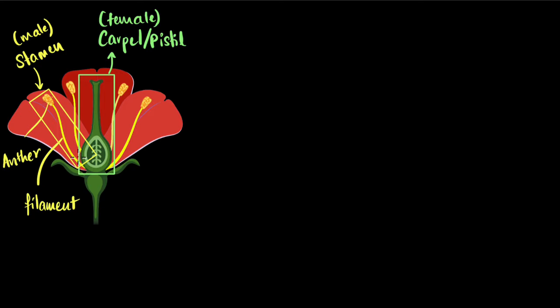And similarly the female part also has sub parts. Carpel also has sub parts. The top part which is very sticky which is where the pollen grain is supposed to sit, that's called the stigma. Then there is this long style. Then finally we have the ovary. The ovary contains the egg cells. You can see tiny structures over here. That's where the egg cells sit.